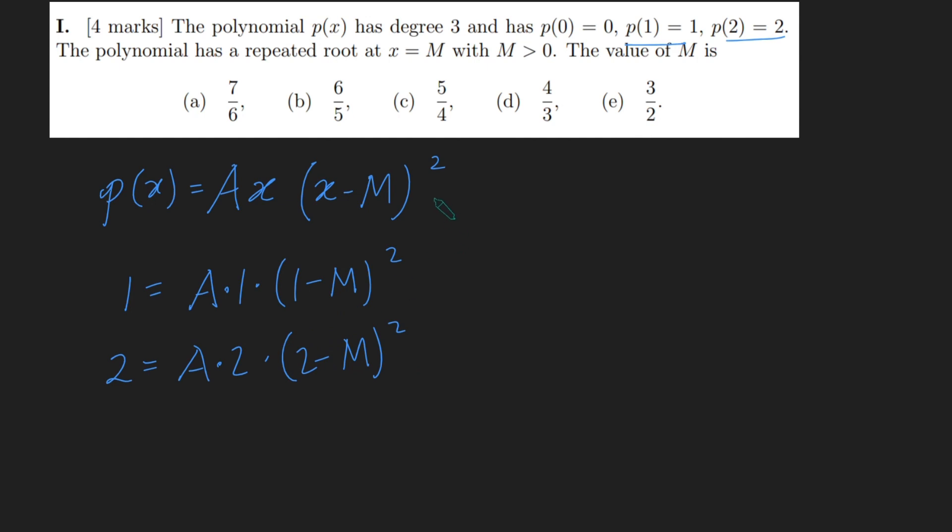Since for this question we're only interested in the value of M, I don't need to worry too much about what A is, so I'm going to eliminate A by dividing these two equations by each other. 2 divided by 1 is 2, and on the right hand side the A's cancel and I get 2 times 2 minus M squared over 1 minus M squared. So I get 2 equals 2 times that, so the 2's cancel.